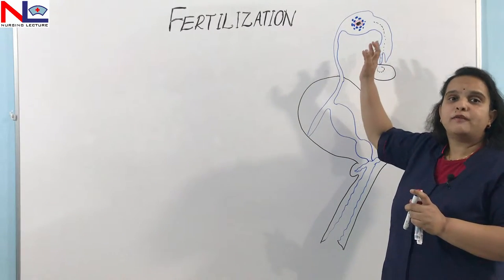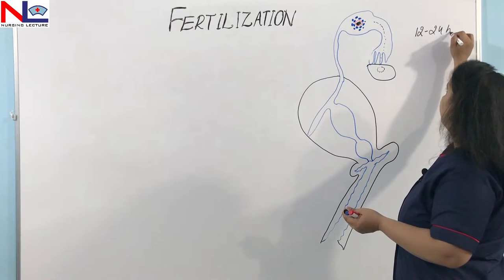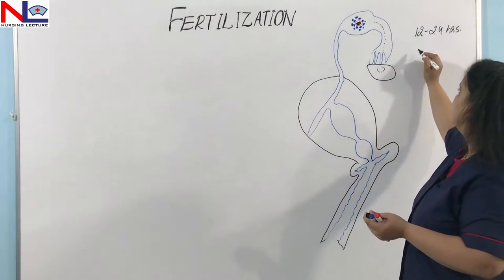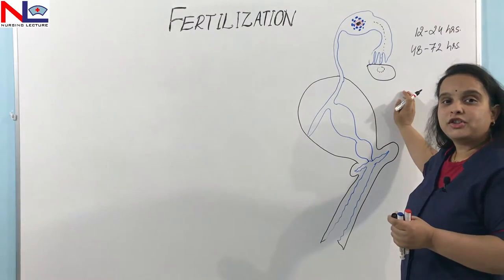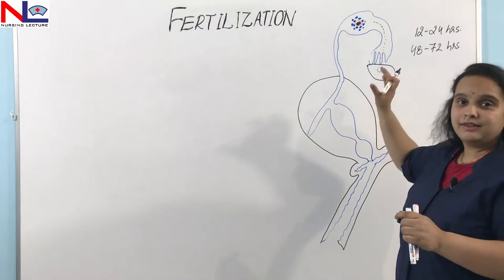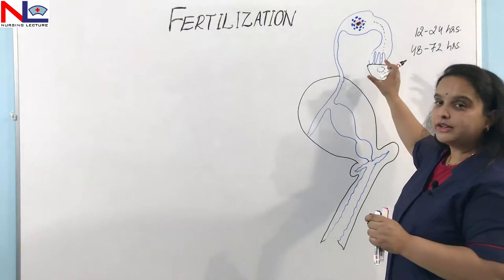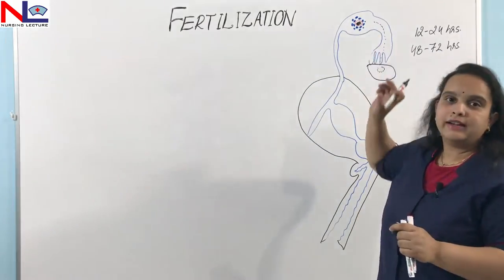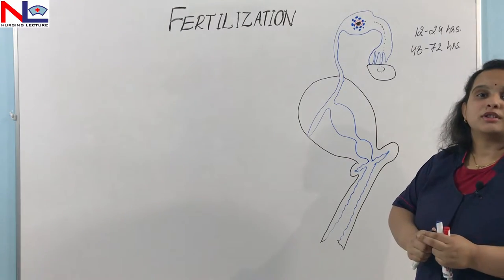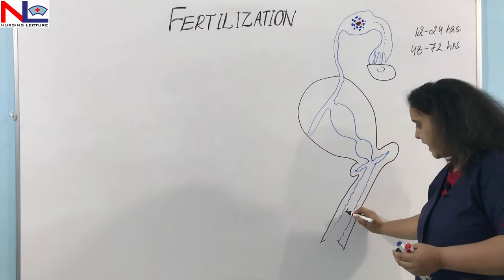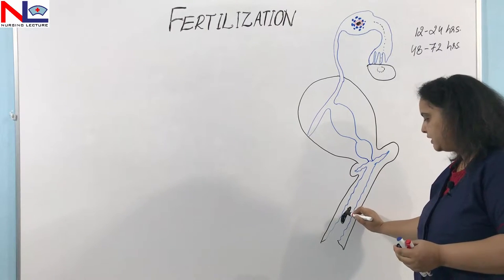The fertilizing lifespan of the secondary oocyte ranges from 12 to 24 hours, and the fertilizing lifespan of the sperm cell is about 48 to 72 hours. Fertilization takes place around the day of ovulation, which is the release of the secondary oocyte from the ovary from the mature Graafian follicle. The secondary oocyte then enters into the ampullary part. The process of fertilization begins with copulation, which leads to the release of semen — that is ejaculation of semen into the vagina.